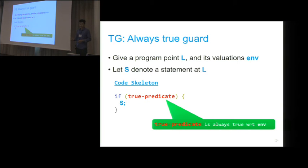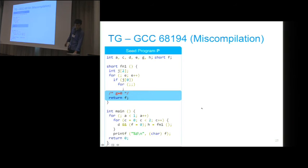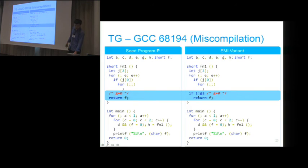The next mutation strategy is always true guard. Let S denote the statement at L. We just synthesize a true predicate to surround the statement S. When you run the program with the same input, the S will still be executed because the conditional of the if statement is always true. Here we instrument the profiling code and find that G is always zero. Then we synthesize the if statement by negating the G, which is always true, and then we surround the return statement. From the perspective of compilers, the compiler might be confused because now this function actually may have no return statement. This triggers a miscompilation bug in GCC.